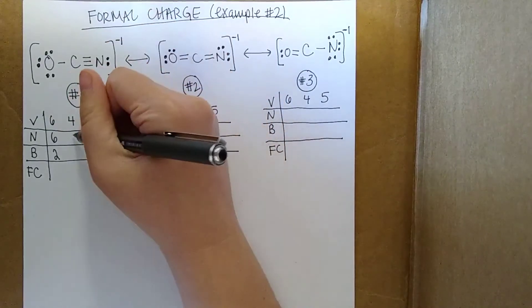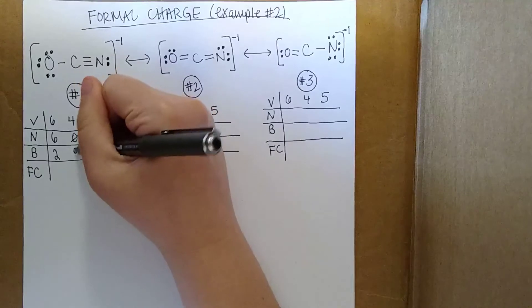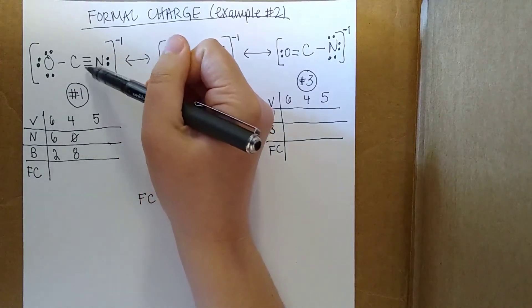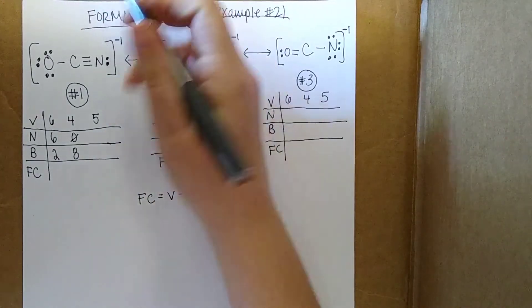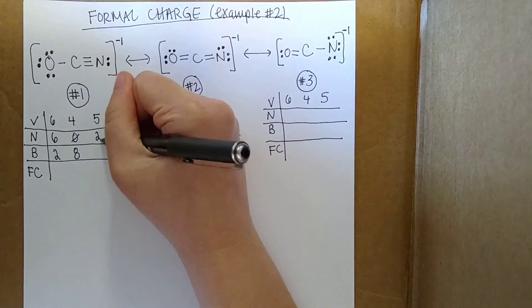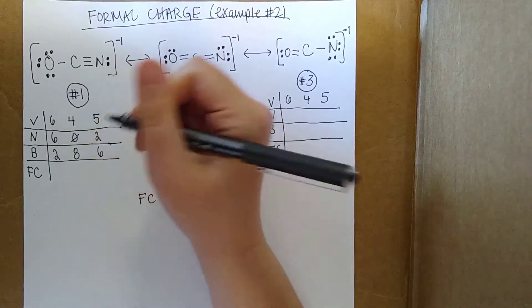For carbon, it looks like we have 0 non-bonded and 8 bonded, so 1, 2, 3, 4 bonds times 2 is 8. And then for the nitrogen here, we have these two electrons in the lone pair, and then 3 bonds, which gives us 6.